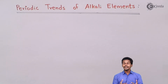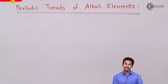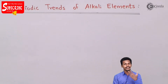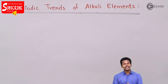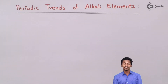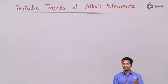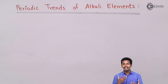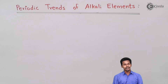Talking about the periodic table, we know that the s-block elements are present at the extreme left of the periodic table and they are divided into two groups: group 1 and group 2. We are going to talk about the periodic trends of the alkali metals, that is group 1 elements. There are certain periodic trends such as atomic size, ionization enthalpy, and nuclear charge.